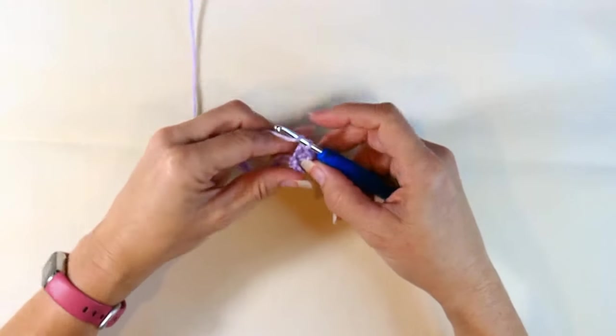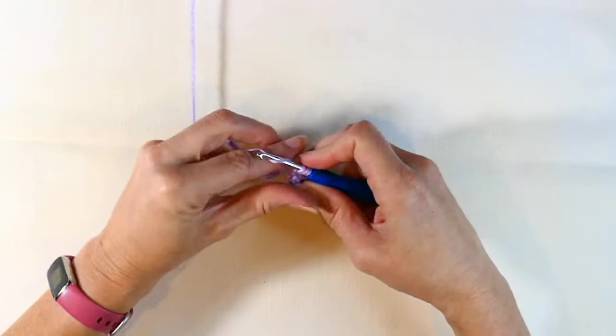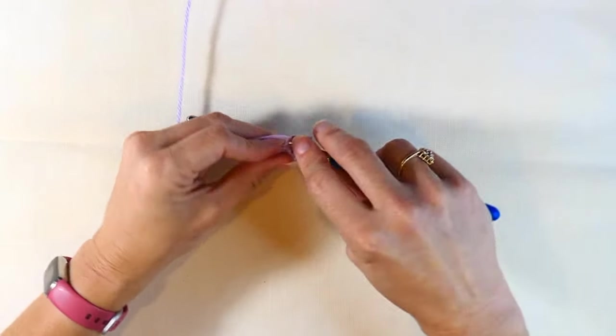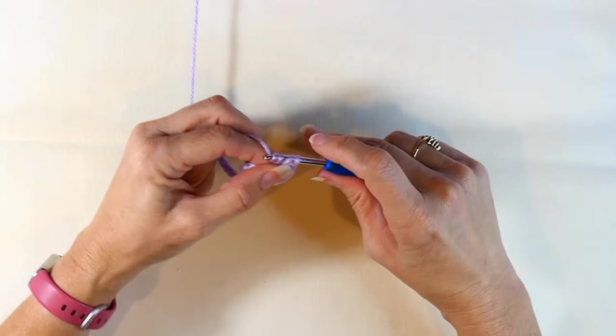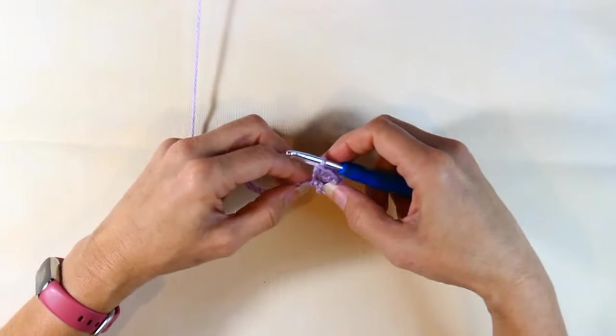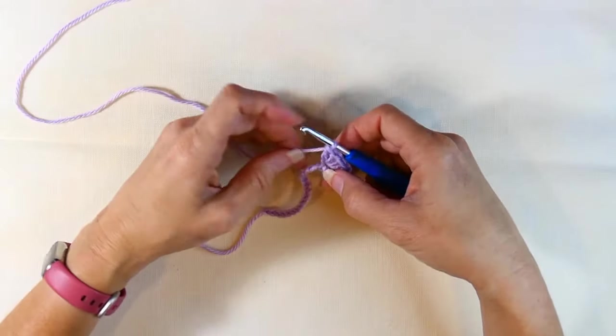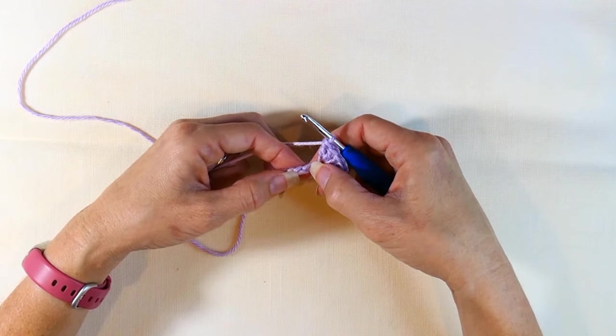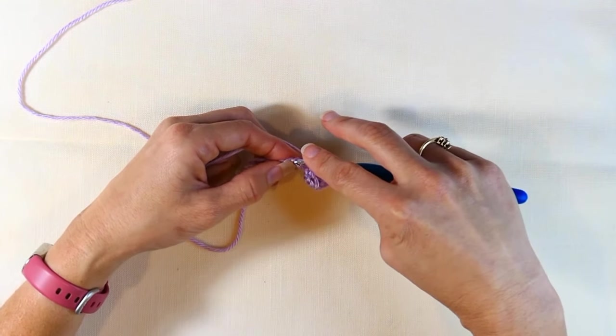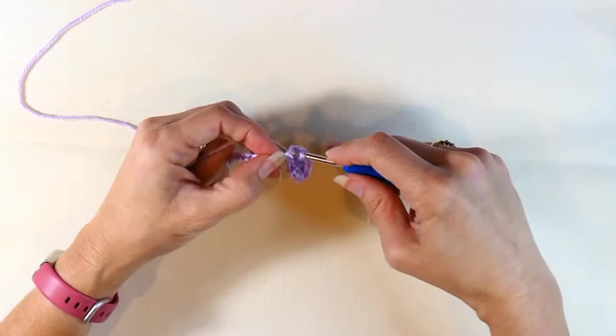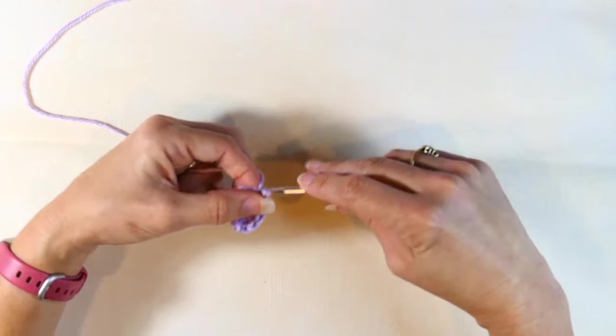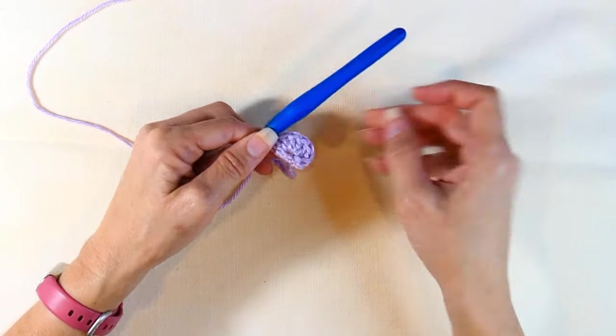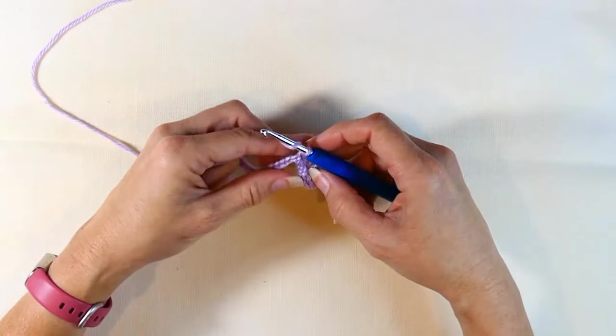And here, again, I'm just doing the 7 double crochets into that 1 stitch. And when I'm done with my 7, I'm going to skip 2 of the chains. So I'm going to skip 1, and then 2, and work into that third chain from my hook. I'm just going to do a slip stitch right there. And so then you have your first 7 shell, and it's so pretty. I love this stitch.